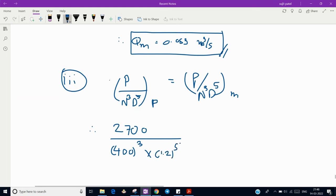So here, power for prototype is 2700 kilowatt given, rpm we know is 400, diameter is 1.2, to the power 5.